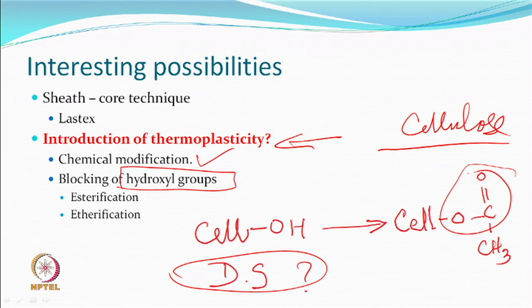In cotton you do not see glass transition or melting, meaning the molecules do not move with respect to each other due to heat. But when you start blocking the hydroxyl groups — which are polar groups — the intermolecular hydrogen bonds cannot be made, the distance between molecules starts increasing, and therefore as you increase temperature the kinetic energy can increase, and you can see glass transition temperatures — thermoplasticity is being introduced.